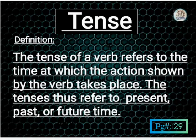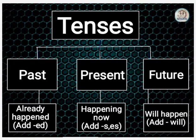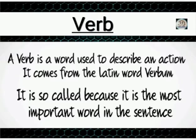Verb سے ہی tense کی پہچان ہوتی ہے جس سے پتہ چلتا ہے کہ کام کب ہوا۔ Tenses کی تین categories ہیں: Past, Present, اور Future۔ Past میں کسی کام کا پہلے سے ہو جانا بتایا جاتا ہے اور verb کے ساتھ 'd' کا اضافہ کیا جاتا ہے۔ Present میں first form of verb کے ساتھ s/es کا اضافہ دیا جاتا ہے۔ Future tense میں first form of verb سے پہلے 'will' use ہوگا۔